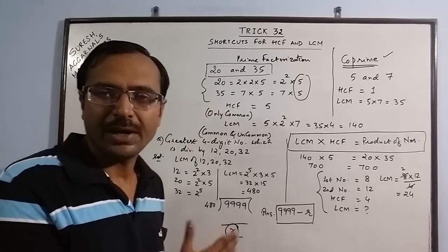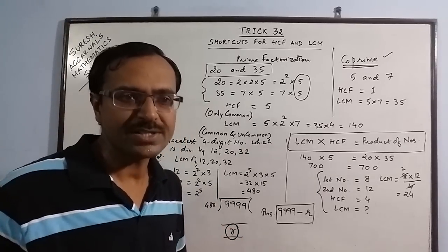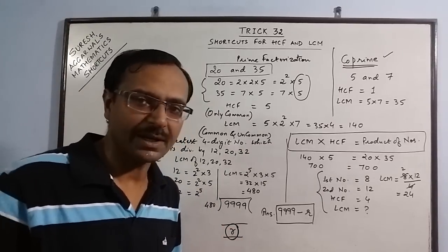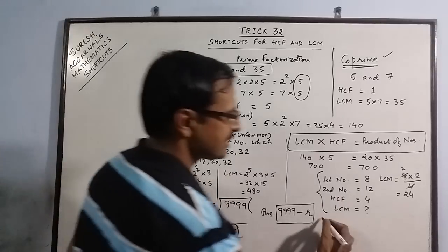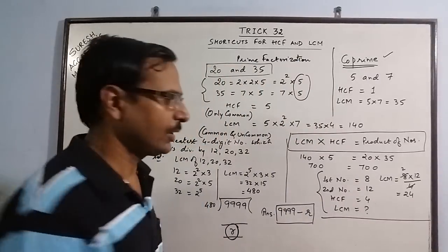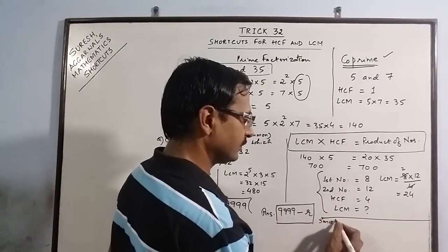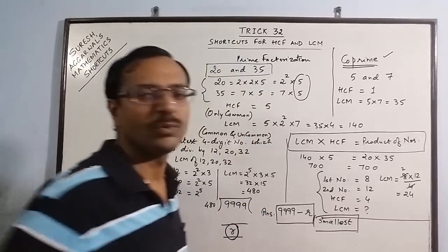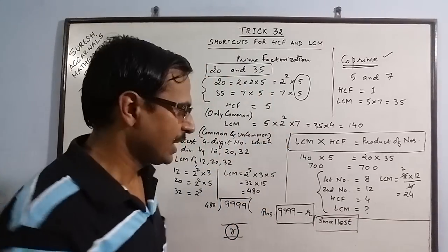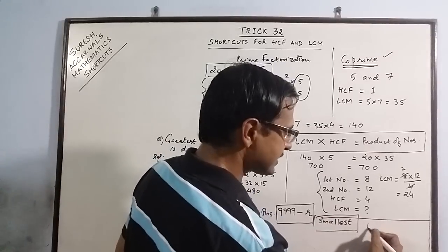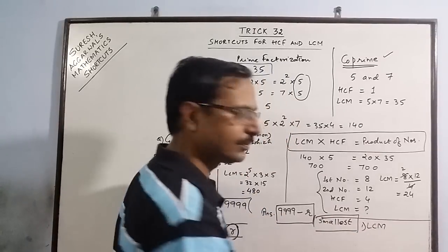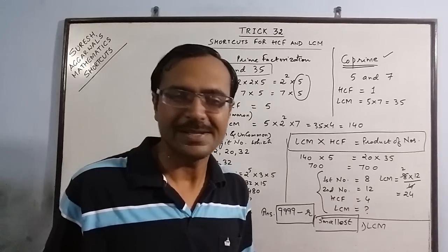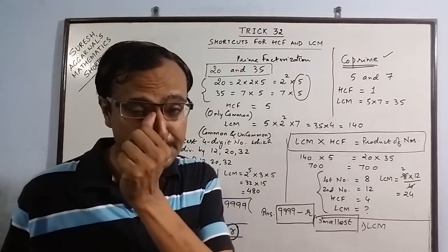Similarly when we are given smallest, say 5 digit number which is exactly divisible, now exactly same question but now we have to find the smallest. Now for finding the smallest what we do is again find the LCM first step. Obviously you have to find the LCM first.